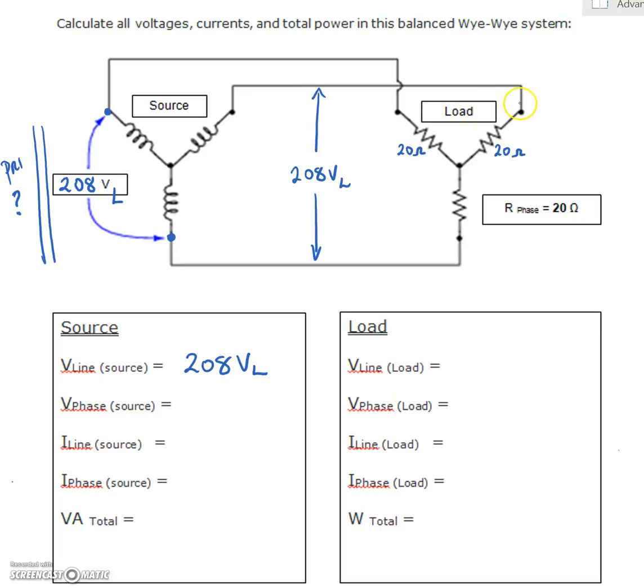That voltage comes across and we can see that it's impressed across this point and this point of our Y resistive load. So that 208 volts line is feeding our Y resistive load, but that voltage is across two resistors. So there's no way that this voltage right here is going to be 208 volts. So we're going to write down our rules for the Y circuits.